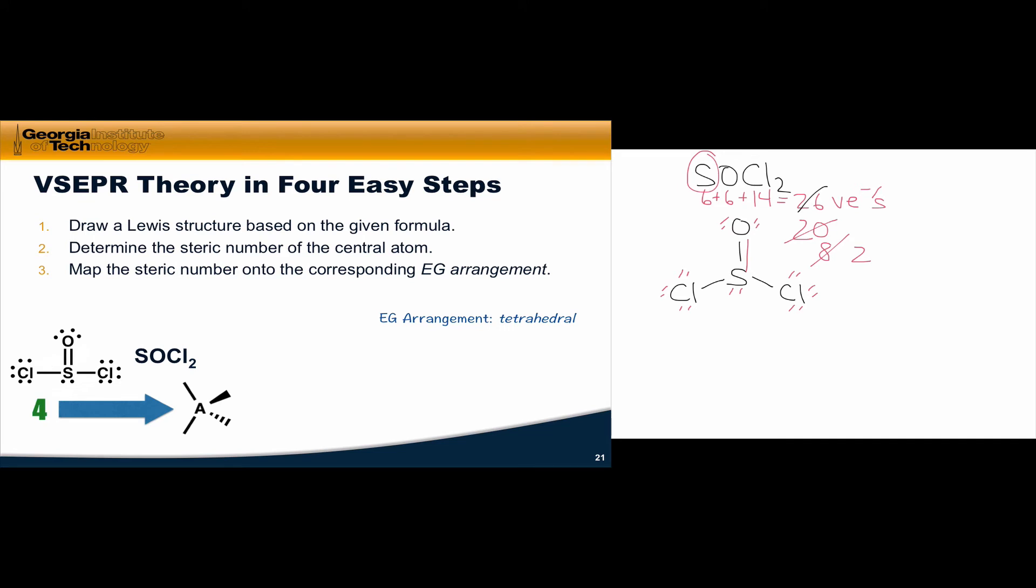The next step, using either something on a crib sheet or your notes that are handy, is to map the steric number onto the corresponding electron group arrangement. And this is one of the most valuable things that you can put on a crib sheet, is the relationship between the steric number and the corresponding electron group arrangement. For a steric number of four, the corresponding electron group arrangement, as we know, is tetrahedral, and I've drawn a general example of the tetrahedral arrangement on this slide.